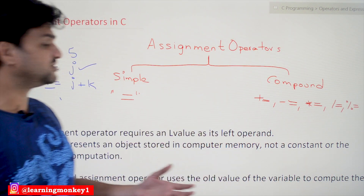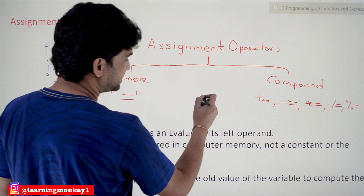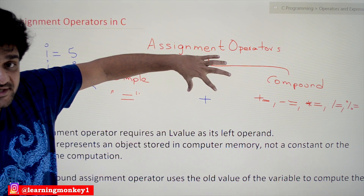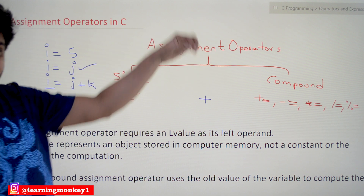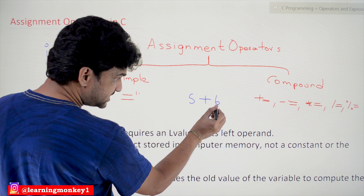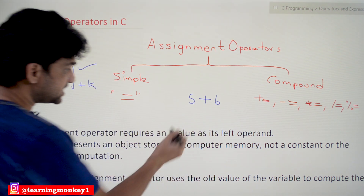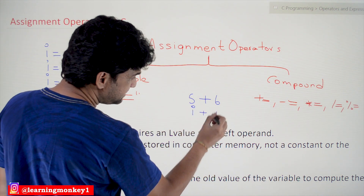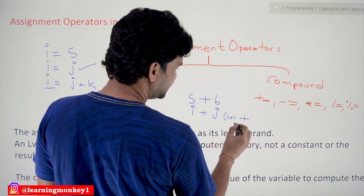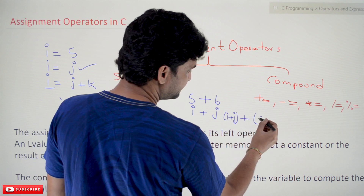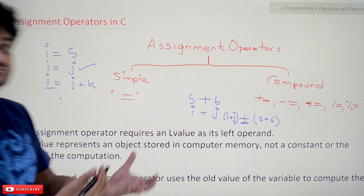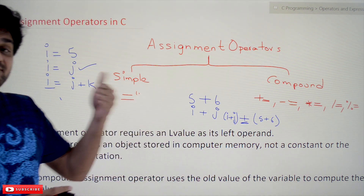For most other operators, such as the addition operator, the operands can be constants, variables, or expressions. For example, 5 + 6 uses constant operands, I + J uses variable operands, and even (I + J) + (5 + 6) uses expression operands. So operands for addition can be constants, variables, or expressions — but this is not the case for the left operand of the assignment operator.